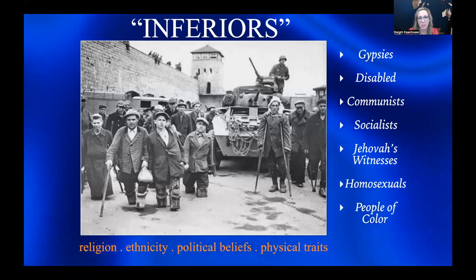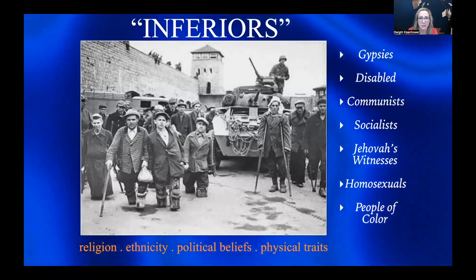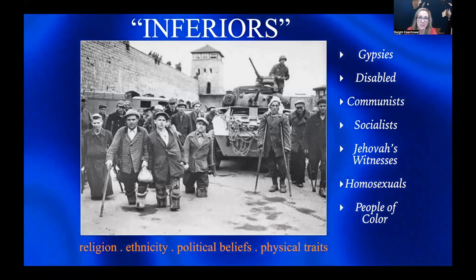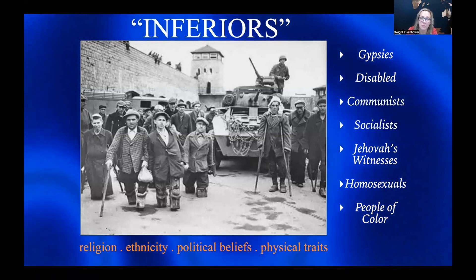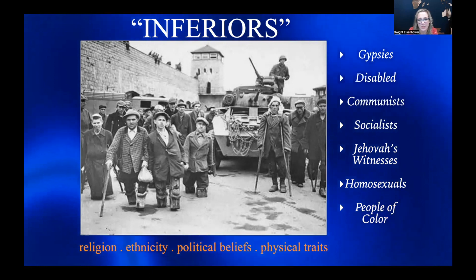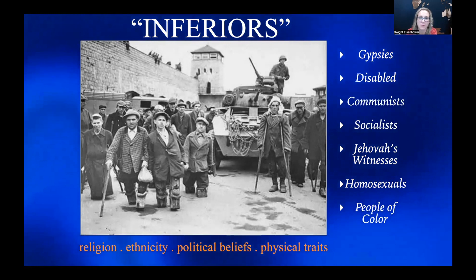It's important to know that Jews were not the only target during the Holocaust. Nazis also deemed other groups inferior because of their religious or political beliefs, or because of different behavior or physical traits. Among them were the gypsies, disabled persons, communists, socialists, Jehovah's Witnesses, homosexuals, and people of color. What did all these so-called inferiors have in common? They did not fit the Nazis' ideal of the Aryan race — tall, strong, healthy, and white European.